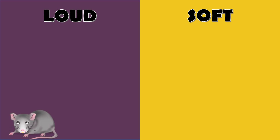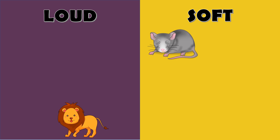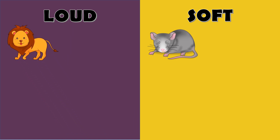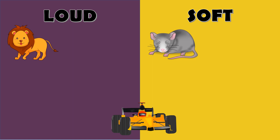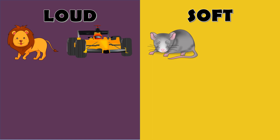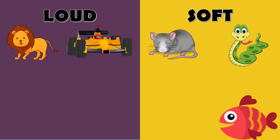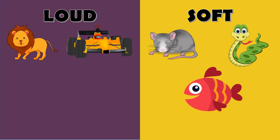First, we have a mouse. What's your answer? Soft — correct! Next, how about this one? Loud sound — very good! Next, a racing car — loud sound, very good! How about a snake? Soft, of course — very good! And last, a fish. Obviously, it's a soft sound. Very good!